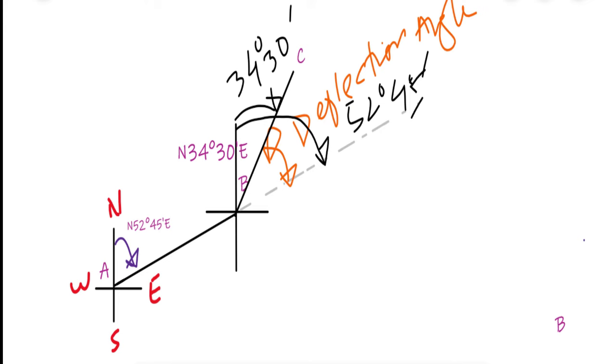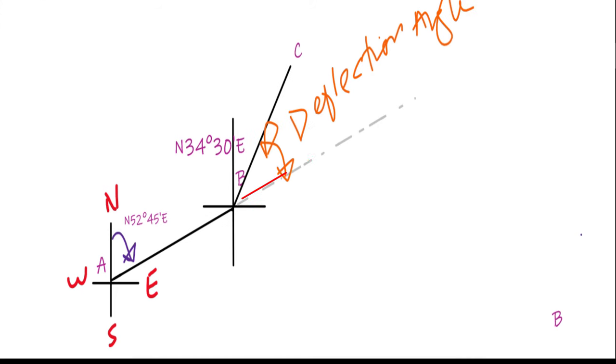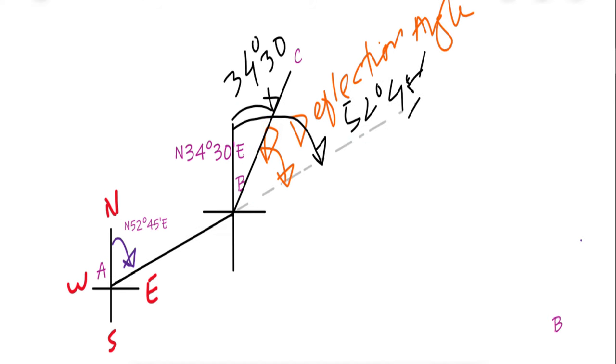As you can see, the extension of line AB also makes the same bearing as that of line AB, that is north 52 degree 45 minutes. Subtract 34 degree 30 minutes from 52 degree 45 minutes, which will give us the deflection angle, that is 18 degrees and 15 minutes.